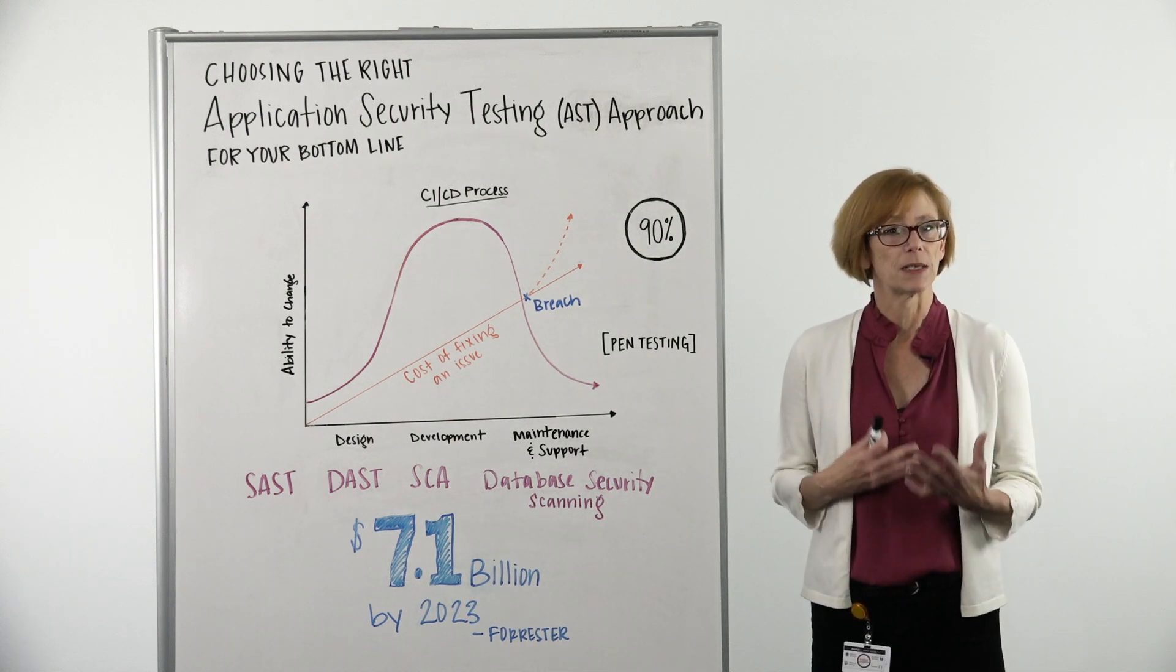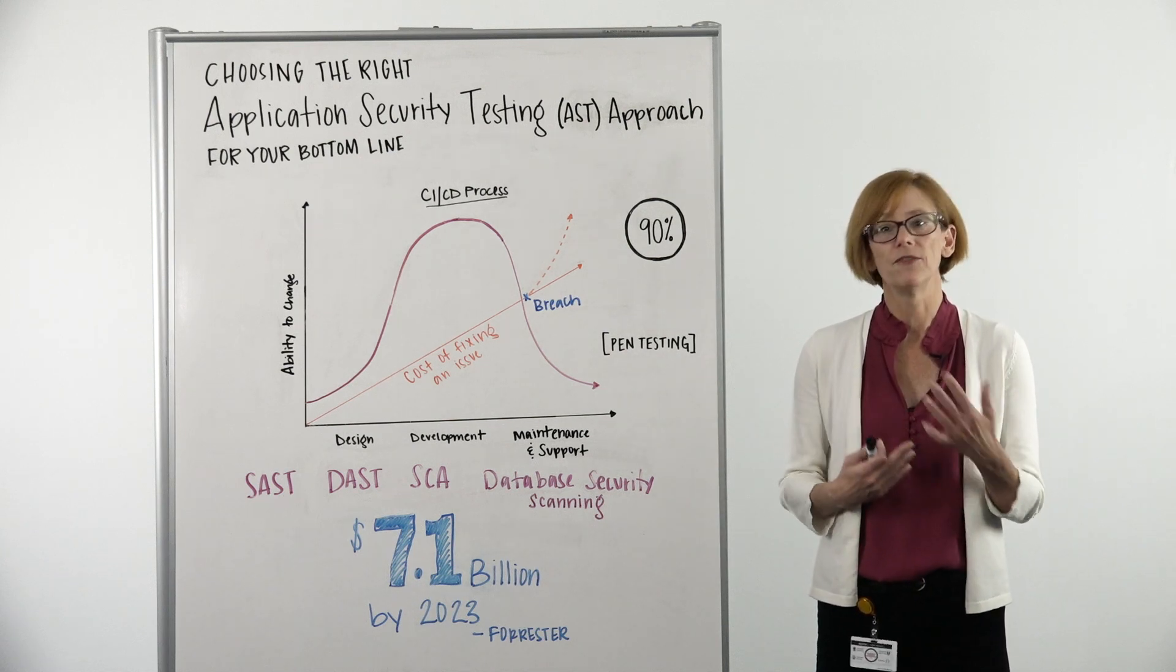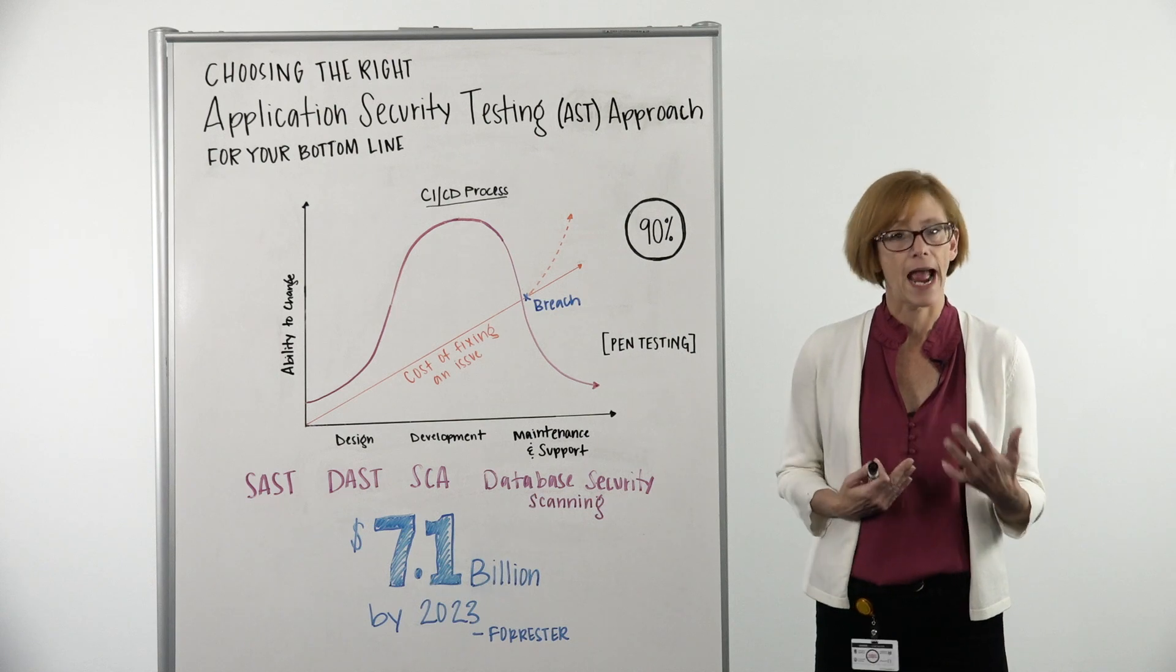DAST, which is a black box capability, is essentially testing things that you don't know anything about. You have no visibility into the source code. You can't access it.